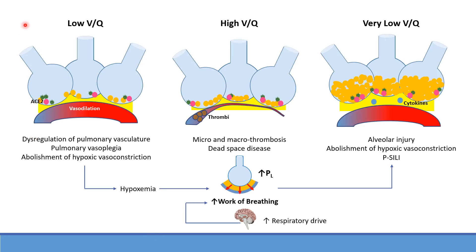Starting on the left side here with low VQ — ventilation to perfusion — on the expense of higher perfusion caused by vasodilation. The vasodilation is caused by the dysregulation of pulmonary vasculature and pulmonary vasoplasia caused by the attachment of the virus to ACE2 receptors. The hypoxia does not cause the normal vasoconstriction response because of the vasoplasia, which is why we say there is an abolishment of hypoxic vasoconstriction.